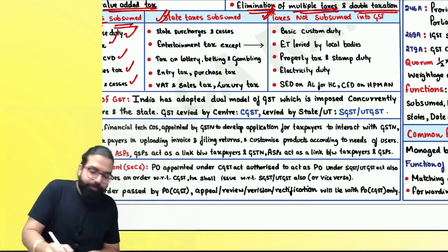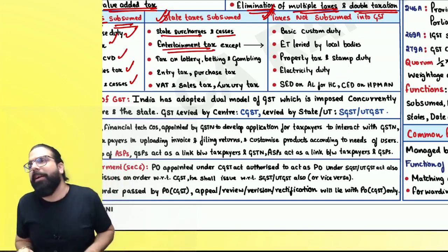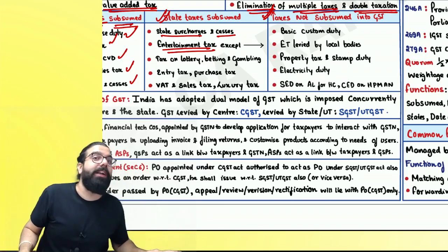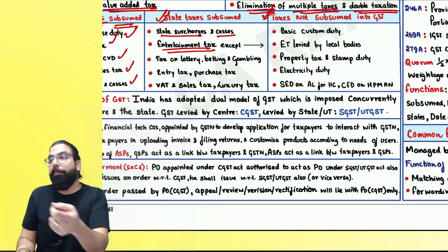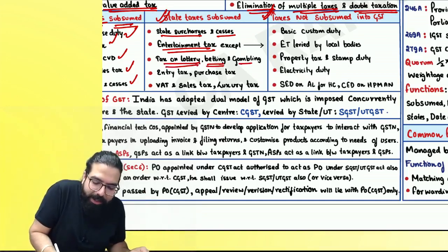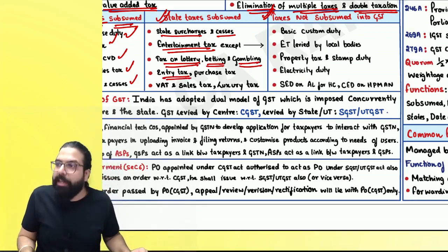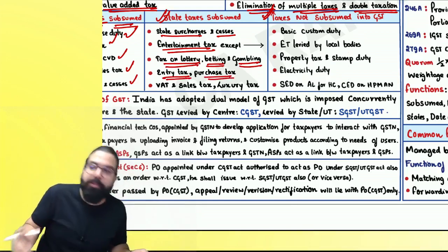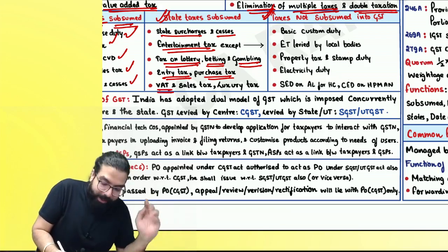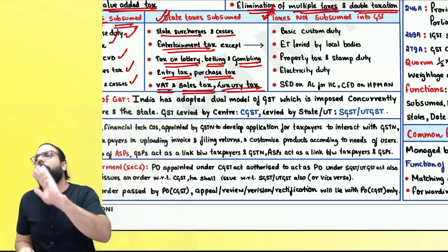State taxes subsumed: state surcharges and cess — gone. Entertainment tax charged on movies, etc. — gone, but entertainment tax charged by local bodies (municipalities) still continues. Taxes on lottery, betting, gambling — gone. Entry tax — gone. Purchase tax — gone. VAT on intrastate sales — gone. Luxury tax — gone. All these are gone because of GST.